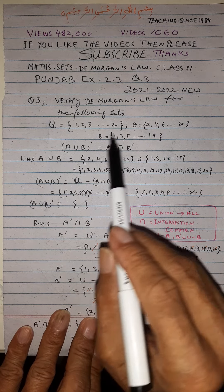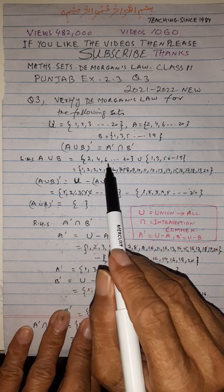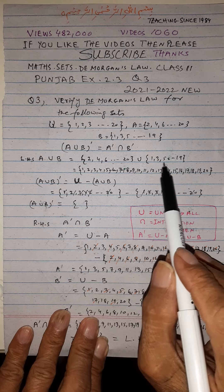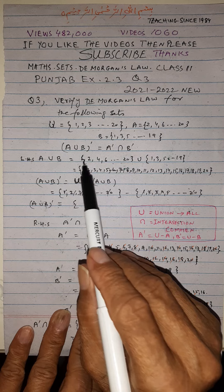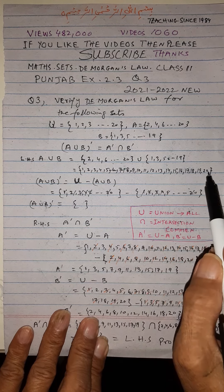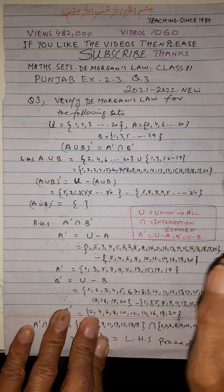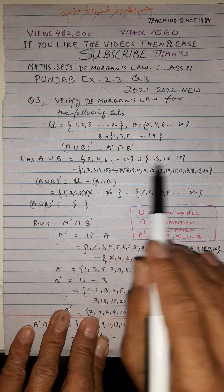We take the left hand side, A union B. First we find A union B. This is 2, 4, 6, 8, 20 and 1, 3, 5, till 19. Union will mean all elements. Then we write all from 1 to 20, and no number will be repeated. We write each number once.